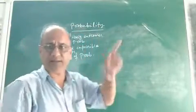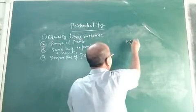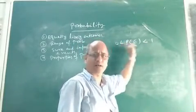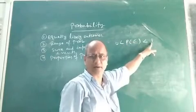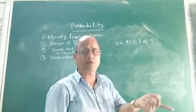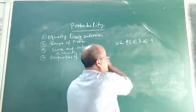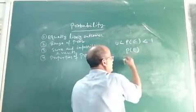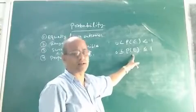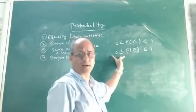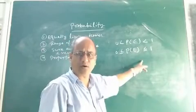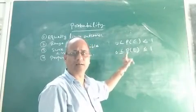Then, range of probability. In the last class, I discussed that probability of an event P(E) is less than 1 and greater than 0 — that means the value lies between 0 and 1. The value of probability of an elementary event lies between 0 and 1, which is called the range of probability. We also proved that probability of an event may be equal to 1 or equal to 0.